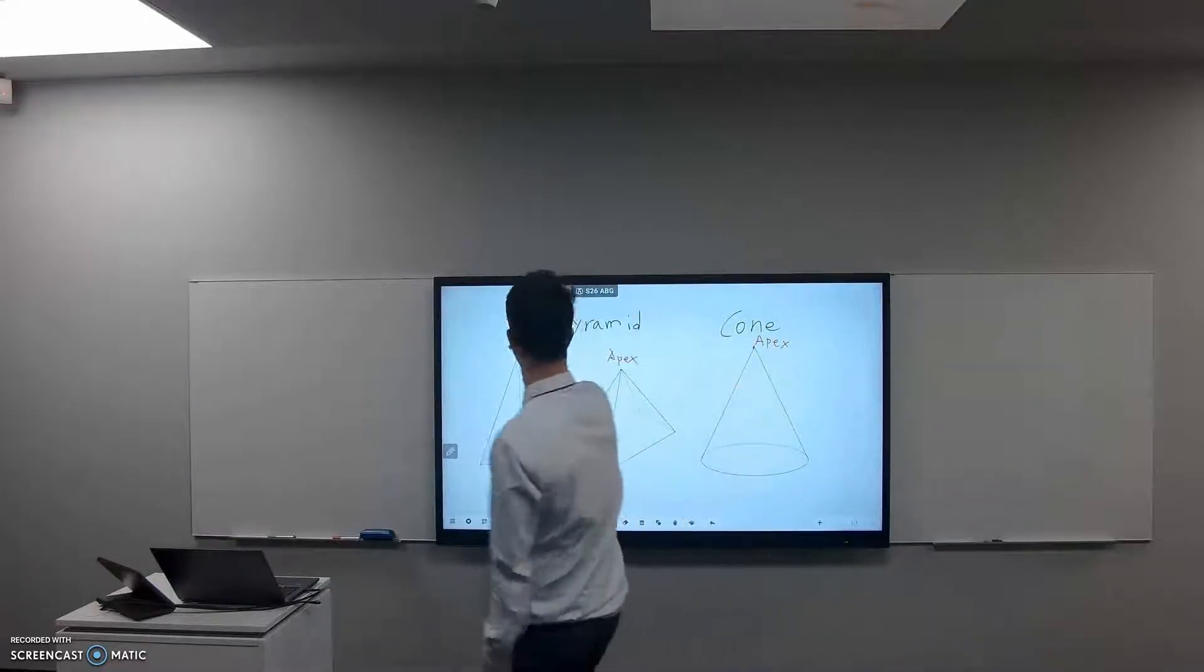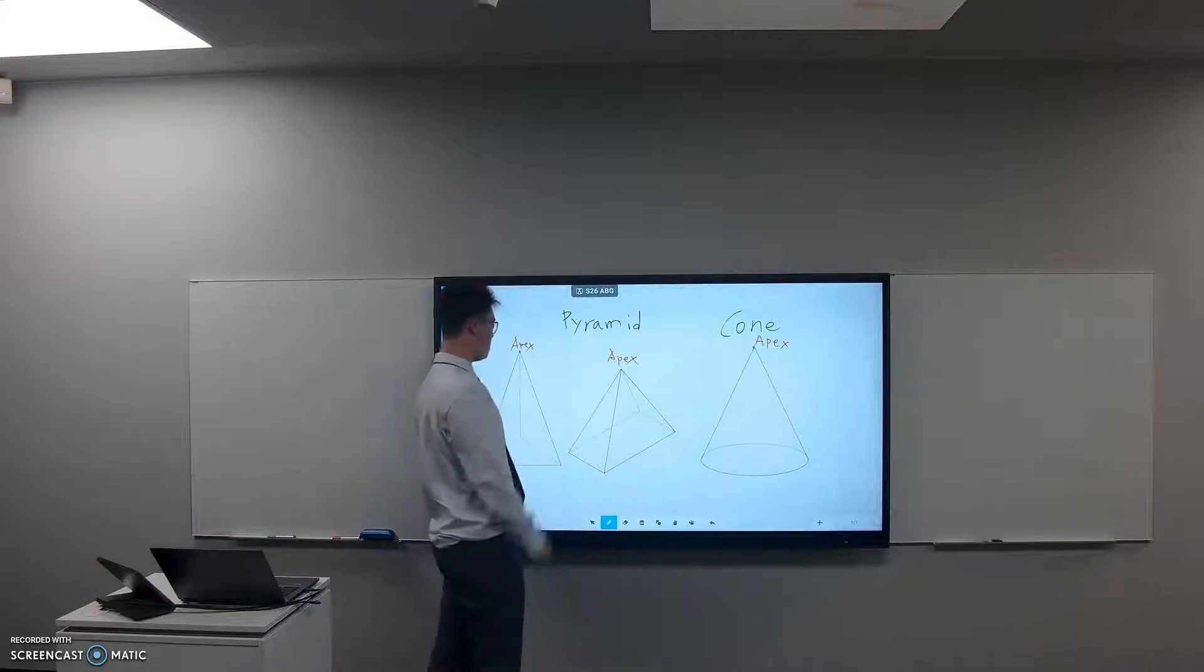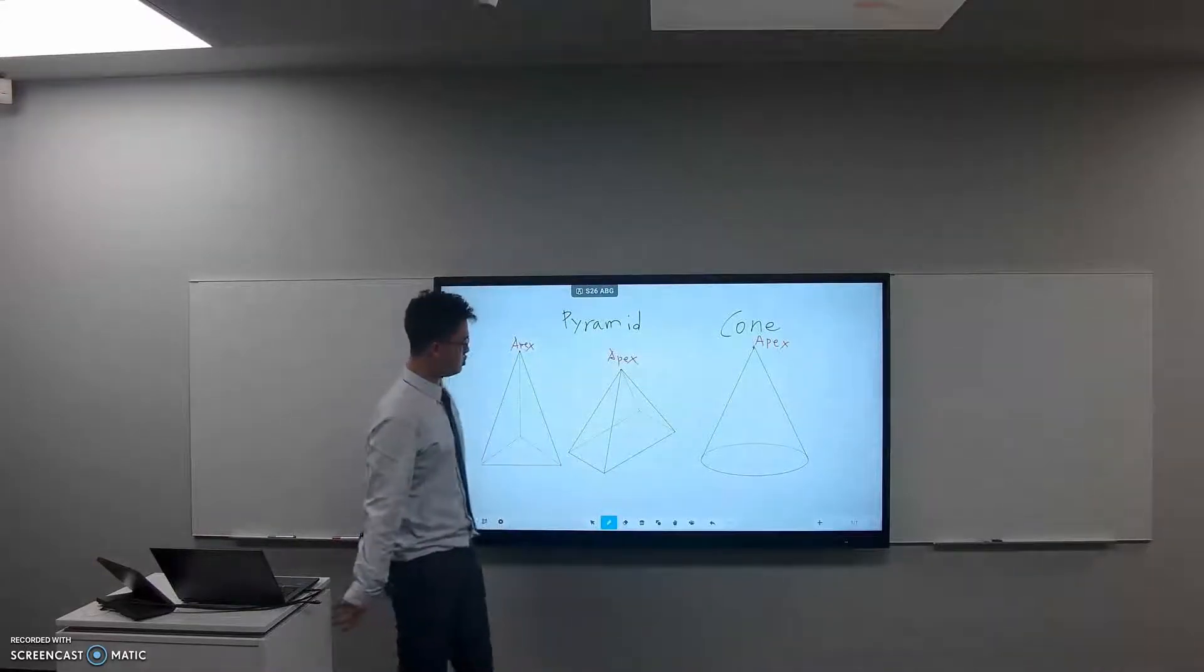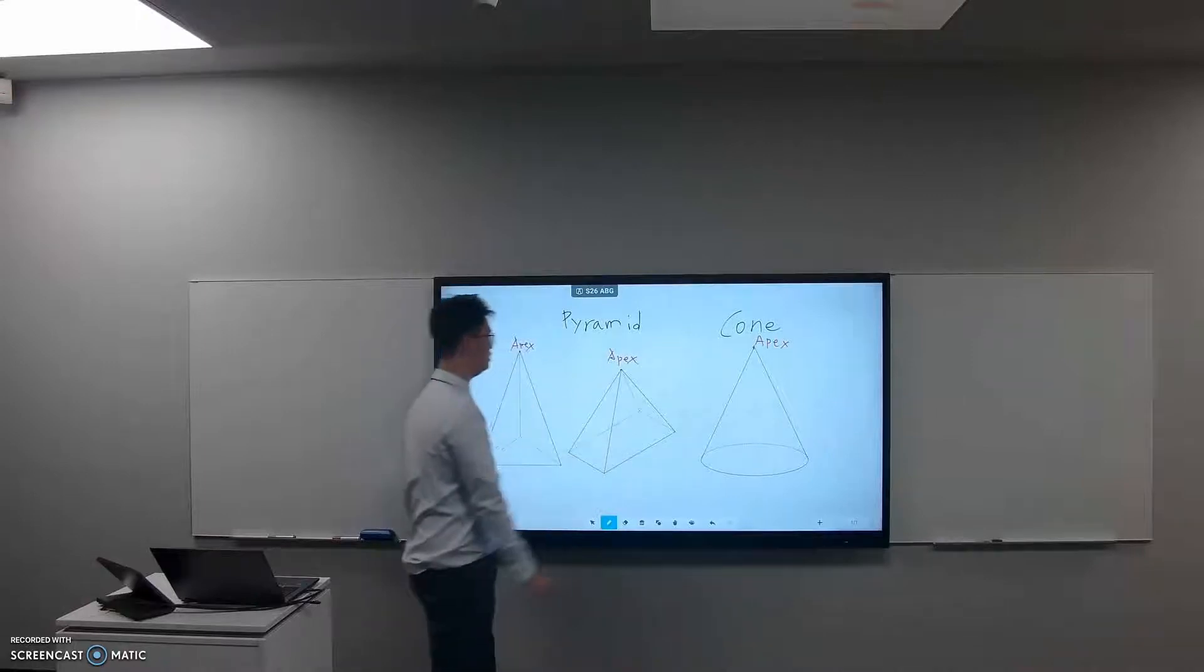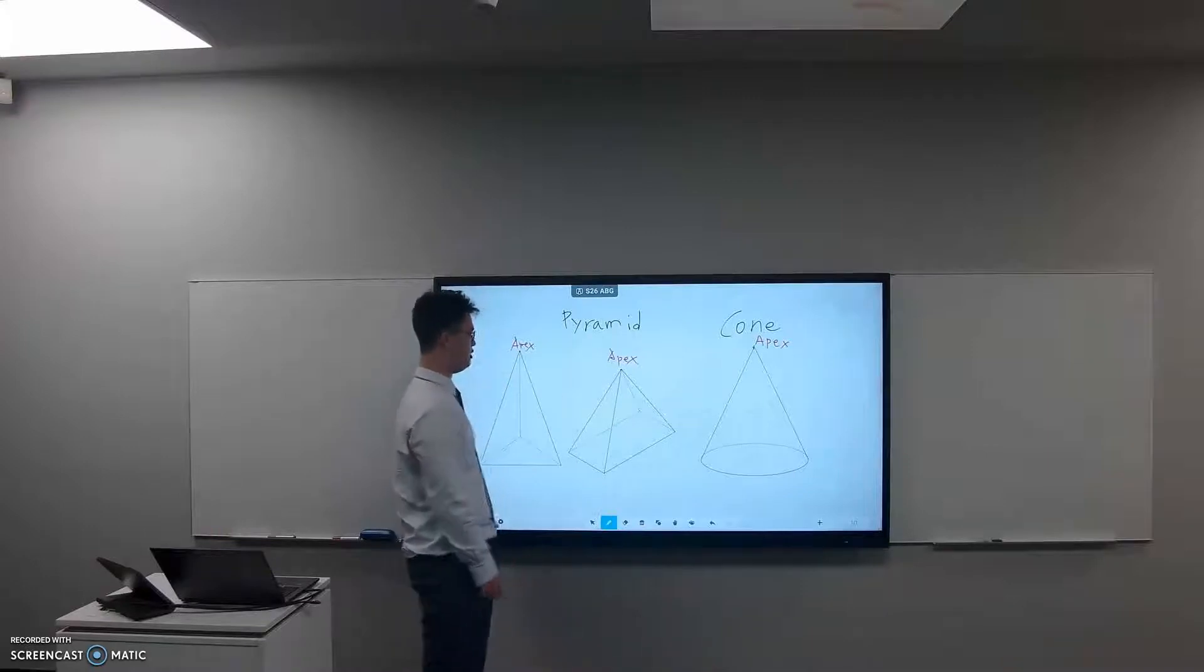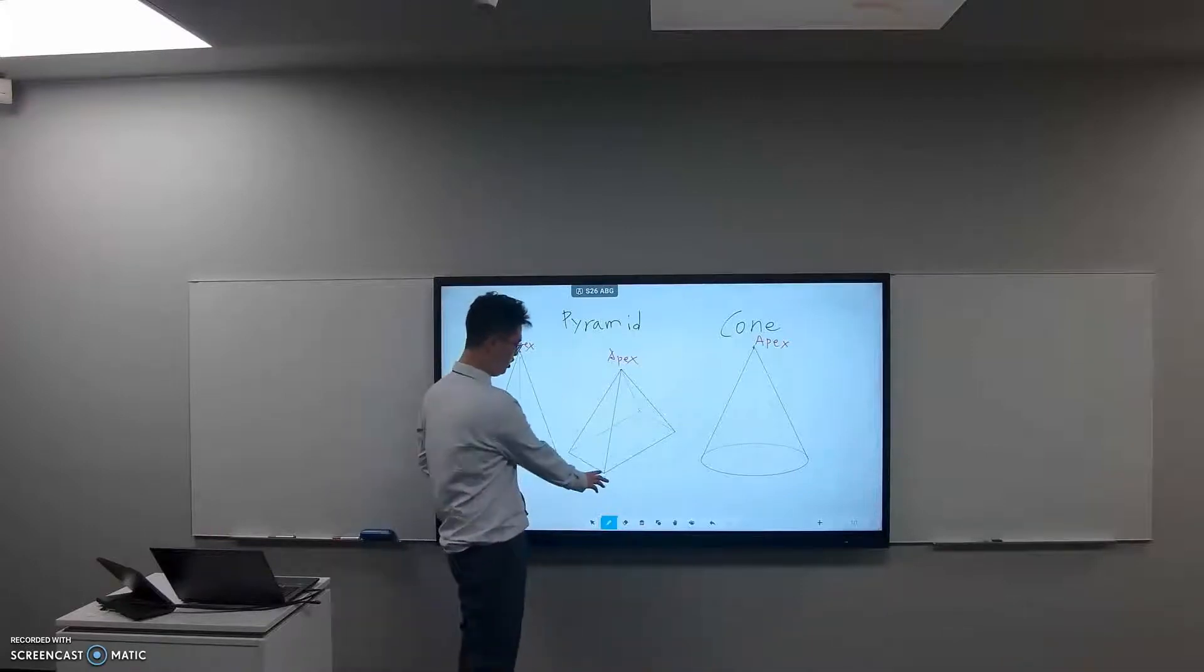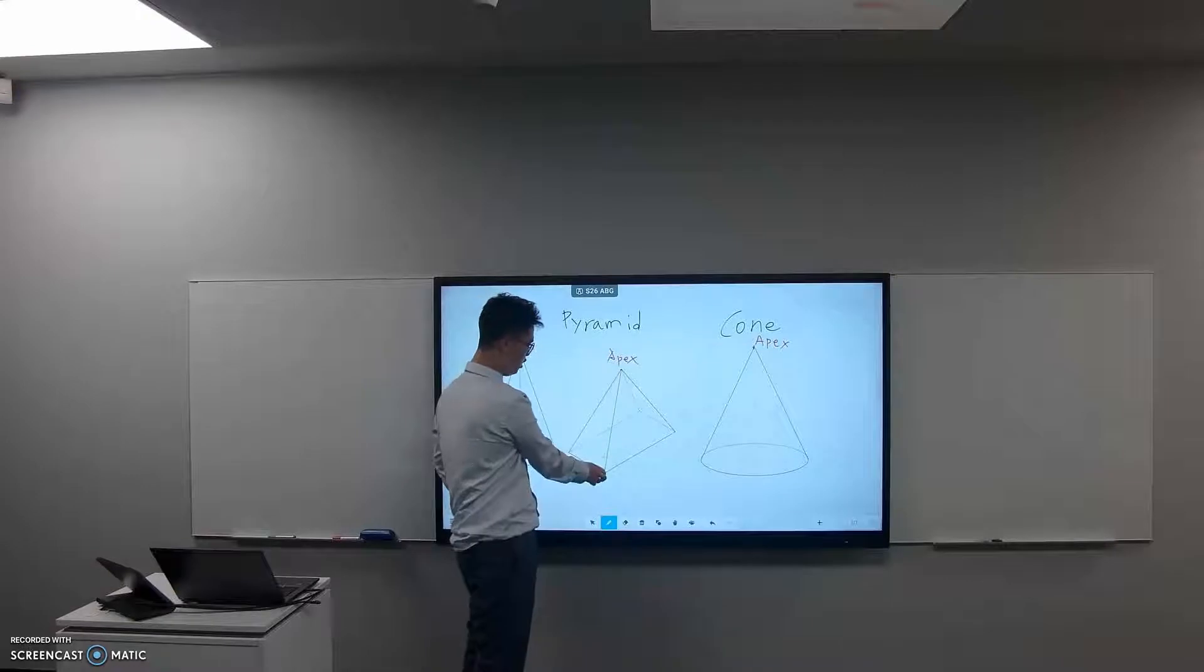What is a pyramid? Well, pyramid means you have a shape at the bottom and then you have an apex, and then you join any point on the base and the apex with a line.